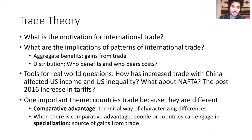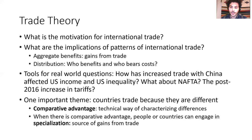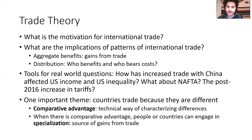An important theme of trade theory is that countries trade because they are different. We have a formal way of characterizing the differences between countries that matter for trade—it's called comparative advantage. When there is comparative advantage, countries can engage in specialization and trade. Specialization means you focus your productive resources on making what you have a comparative advantage in, and then you trade. It's this specialization, taking advantage of differences in technology or resources, that generates the gains from trade.